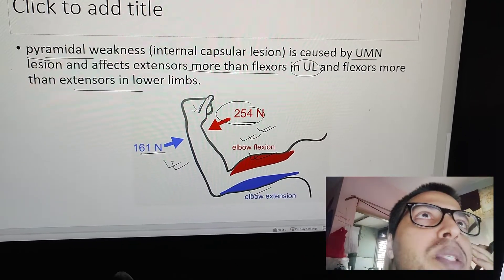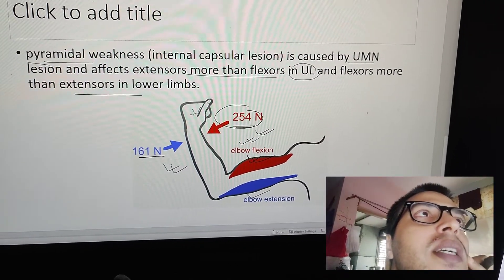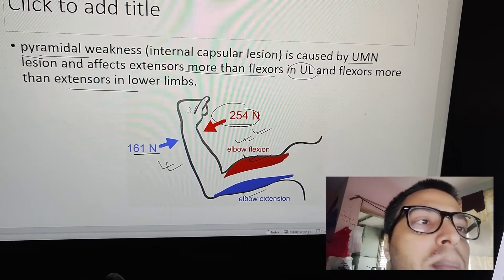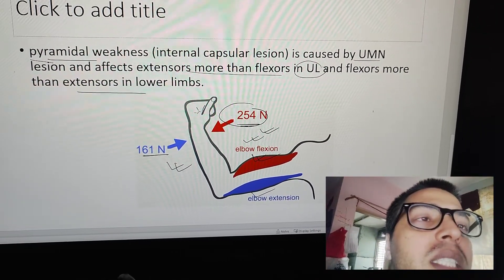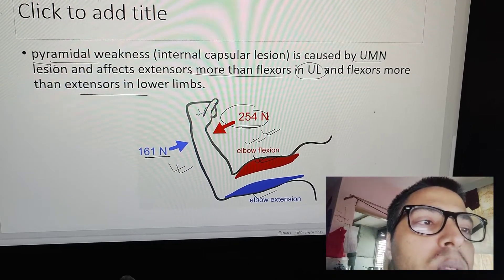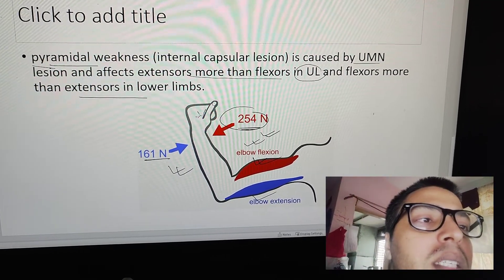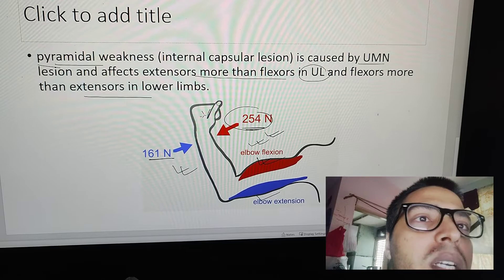This helps in localizing the lesion in the central nervous system. This feature distinguishes internal capsule lesions from peripheral neuropathy or ENMG findings.